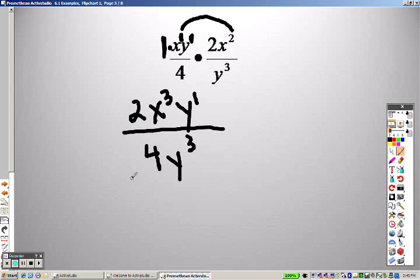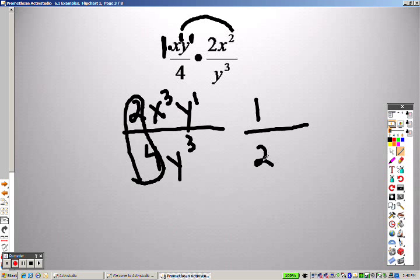Okay, so still looking at the numbers. Take a look here. We've got a 2 and a 4, so that can simplify to 1 half. I have no x's on the bottom, so this is just an x cubed, right?